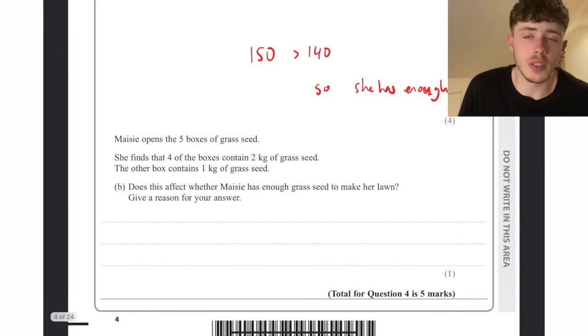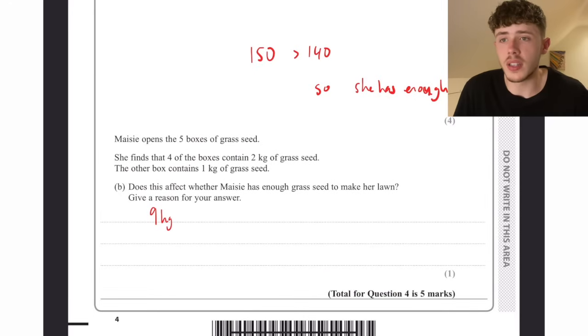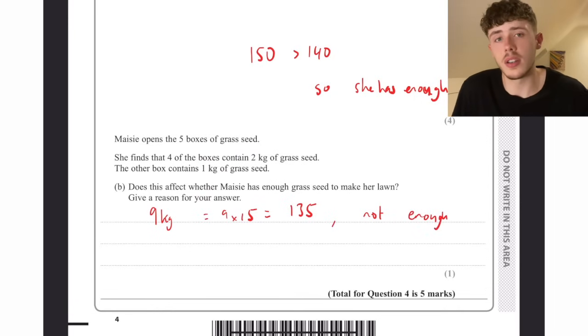When Maisie opens the five boxes of grass seed, she finds four contain two kilograms, but one only contains one kilogram, so now she has nine kilograms. Nine kilograms corresponds to 135 metres squared. As her garden is 140, she now does not have enough.